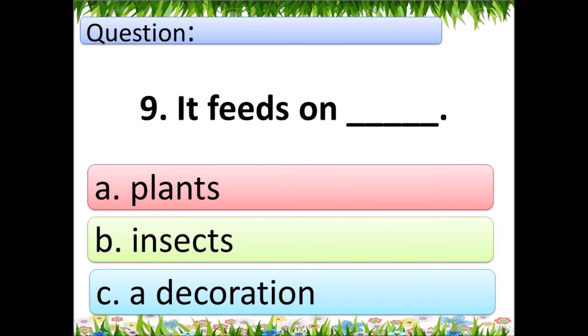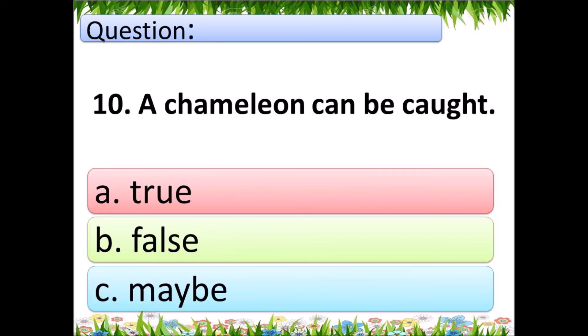Question 10: A chameleon can be caught. A: true, B: false, C: maybe.